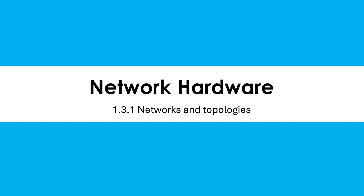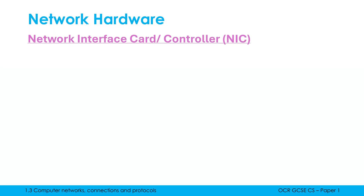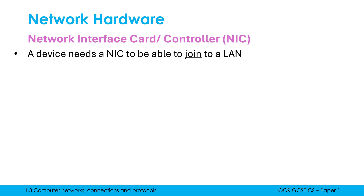We're going to step up some of the technical detail here by going into some of the key pieces of network hardware which most networks will have. Let's start with a network interface card, sometimes called a network interface controller, and often shortened to just NIC. A device needs to have a NIC to be able to join a LAN, which means every device that can connect to a network needs one.